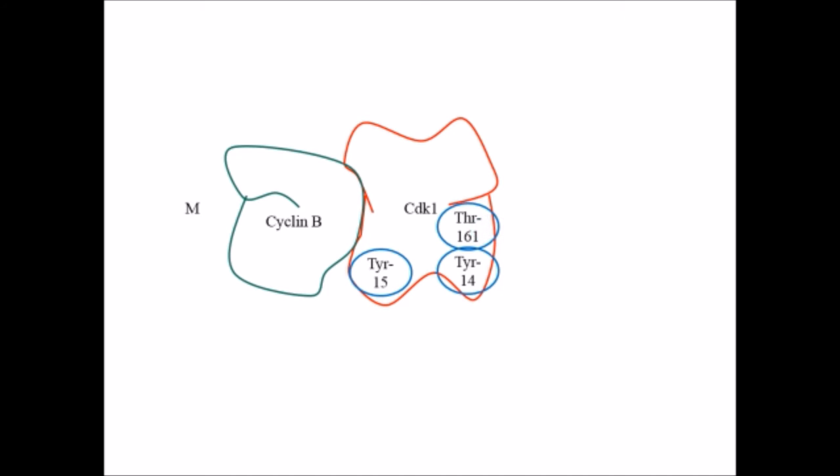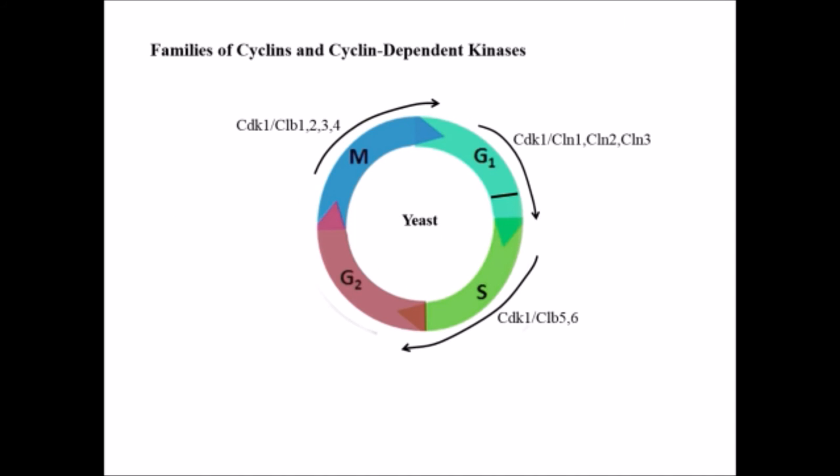What happens during M phase? The cyclin B is degraded and in M phase it will again recycle to the G2 phase.